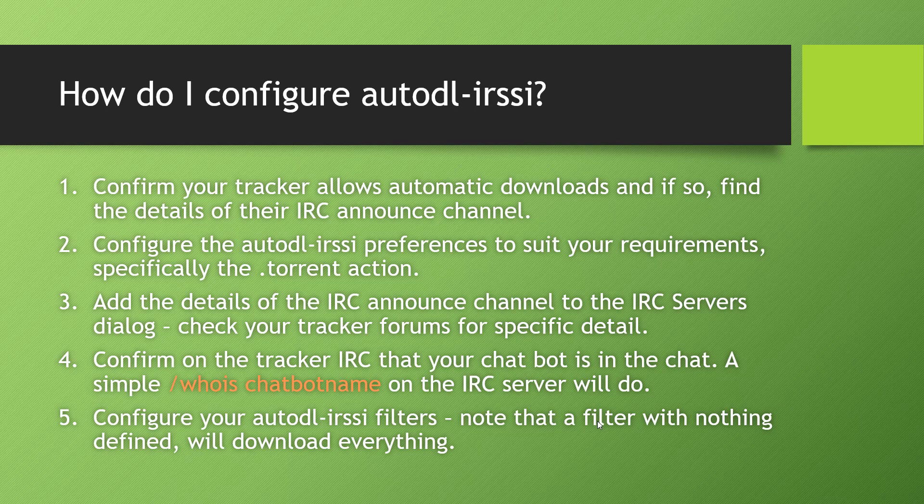The final point — which is the most important one and will probably take the most time — is configuring the filters for Auto DL iRSSI. One thing you can do as a test is to create a filter with nothing defined in it. In essence, that will download everything posted onto a particular tracker. It's good to do that just as a test to make sure that torrents are pulling through okay.